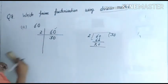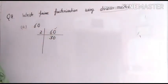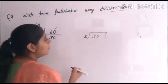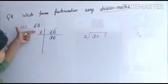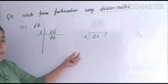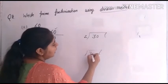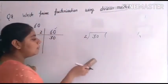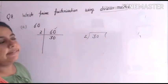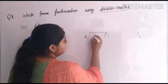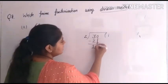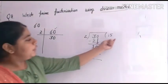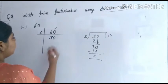Now, thirty — what do we divide it by? The smallest number that exactly divides 30 — what is it, children? Two. Although five also divides it, we go from smallest to largest, so we take two first. Two fives are ten — bring down — fifteen is the quotient. We write the quotient here and the divisor, two, here.